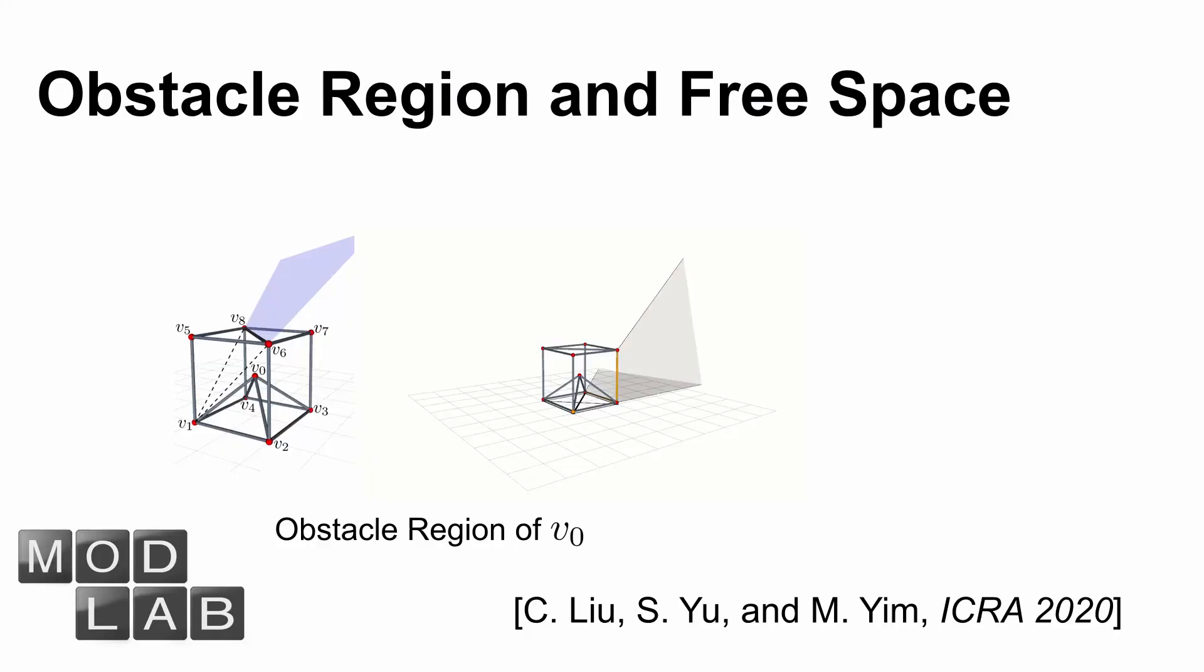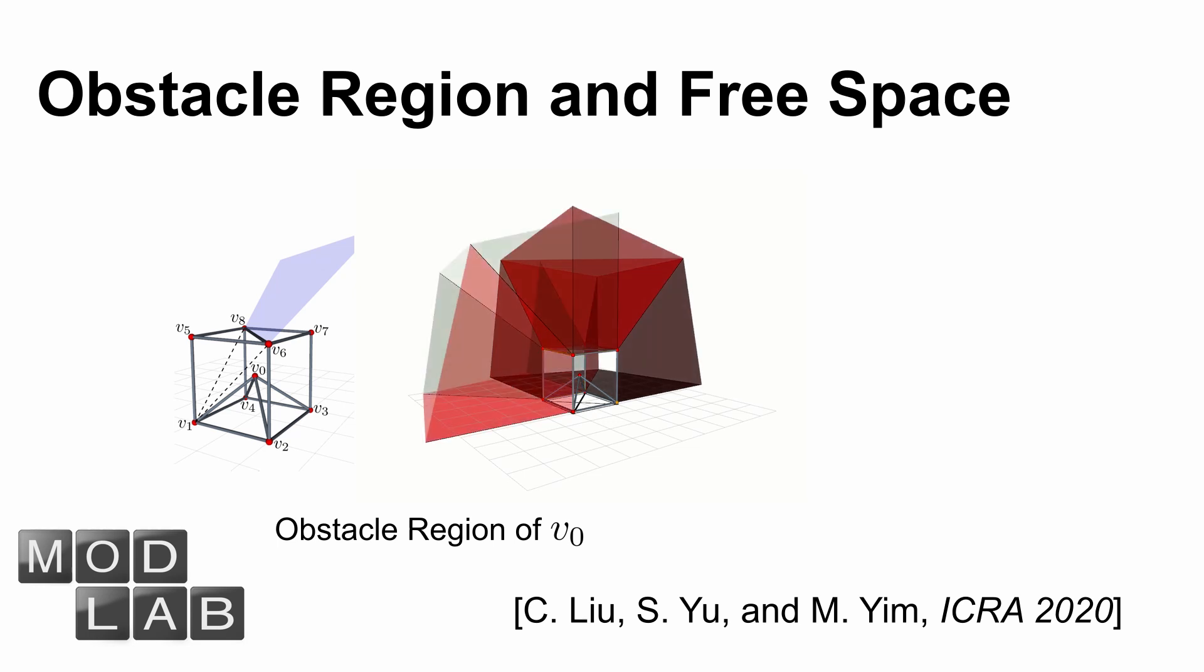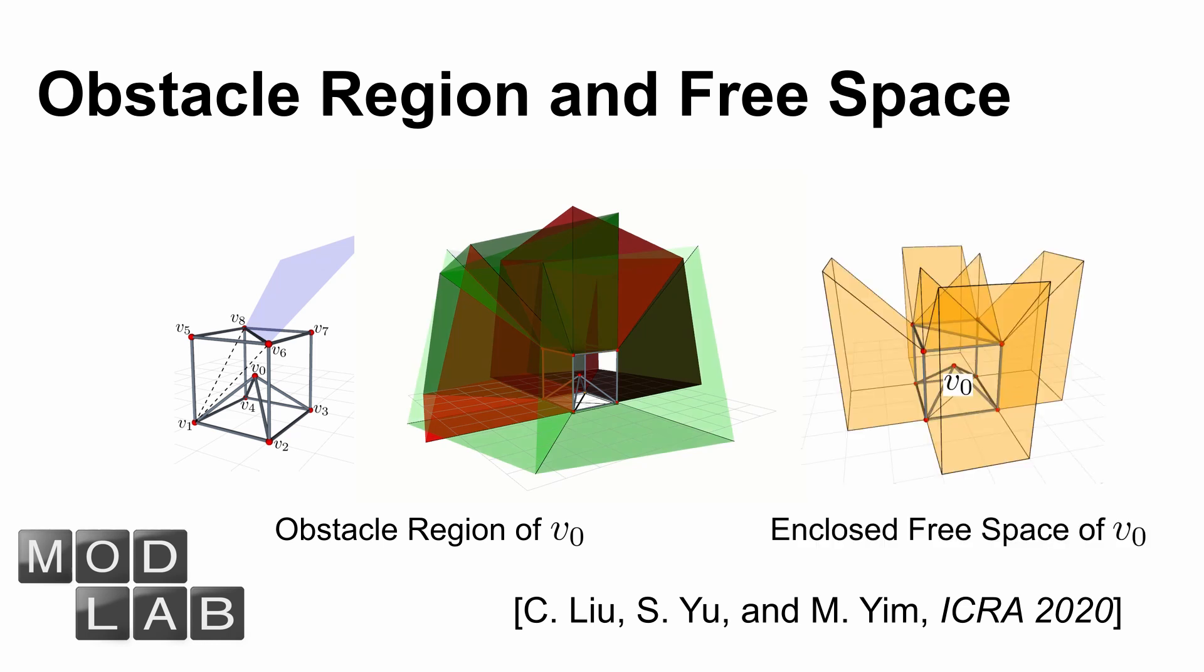For a VTT, the configuration space of a node is complicated due to the complexity of the obstacle region. The obstacle region is formed by multiple polygons, and a fast algorithm to compute the boundary of the enclosed free space has been presented in our previous work.